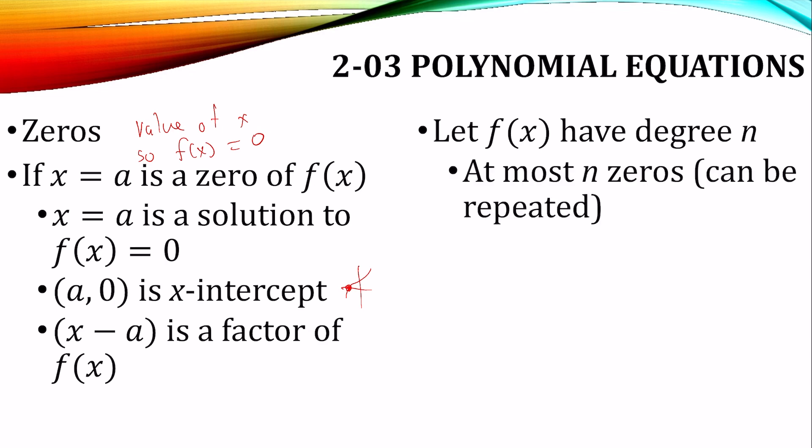If we have degree n, then there can be at most n zeros and they can be repeated. And there can be at most n minus one turning point. So you have the same number of zeros as degree, but one less turning point. And a turning point is where it goes from going up or down to the other way.